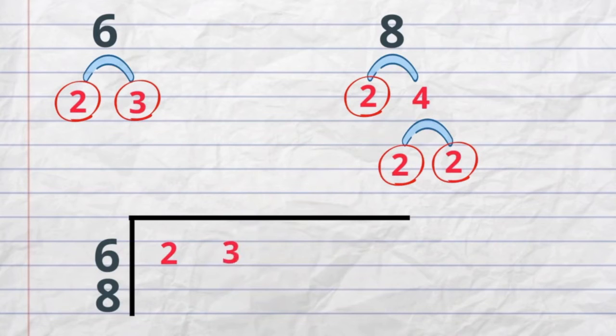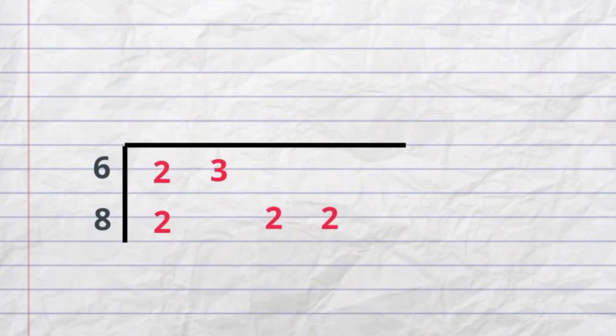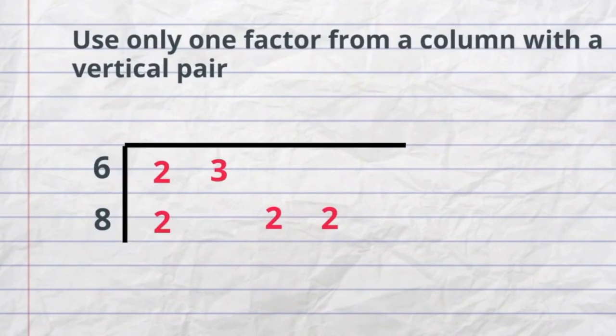I will skip a space where the 3 is because I do not have a 3. So I will write 2, skip a space, 2 and 2. I next will use this rule: use only one factor from a column if you have a vertical pair.